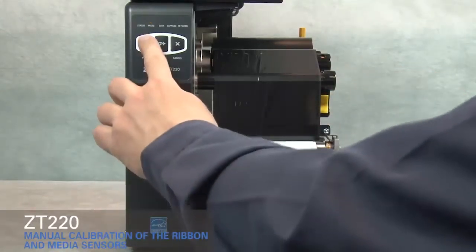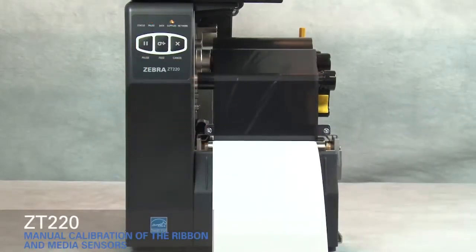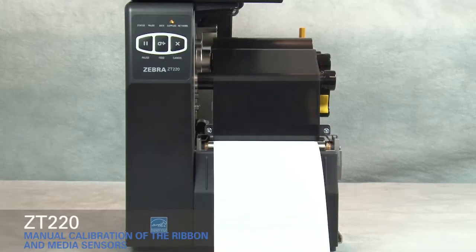Close the printhead. Press pause to calibrate the printer. The supplies light flashes yellow. The process is complete when the supplies light stops flashing and the pause light turns yellow.